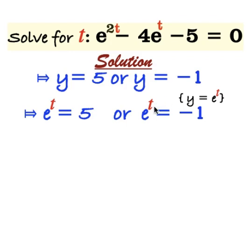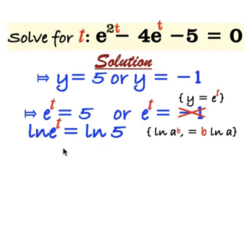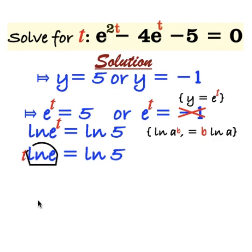Euler's constant raised to the power t is always greater than 0. Therefore, minus 1 is invalid. Then, we have Euler's constant raised to the power t is equal to 5. Take the natural log of both sides. We have natural log of Euler's constant raised to the power t is equal to natural log of 5. Recall that natural log of a to power b is equal to b log a. Therefore, this expression can be written as t times natural log of Euler's constant is equal to natural log of 5. Natural log of Euler's constant is equal to 1.